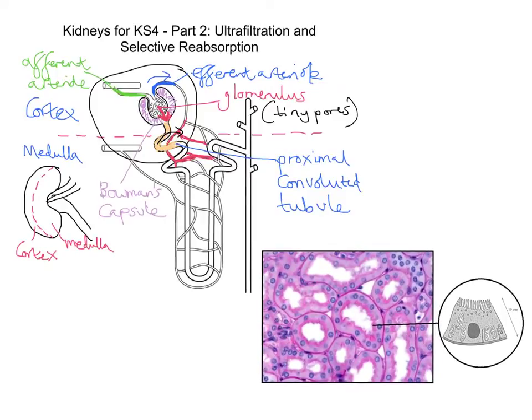Here are some cells of the proximal convoluted tubule — I've almost zoomed in on one particular area marked with an asterisk. The reason I want to show you this is because in the proximal convoluted tubule, most reabsorption is by active transport.